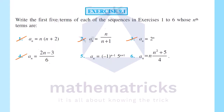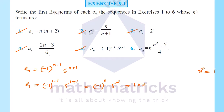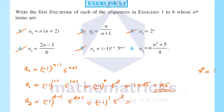Next, question 5: an is equal to minus 1 raise to (n minus 1) into 5 raise to (n plus 1). When n equals 1: minus 1 raise to (1 minus 1) into 5 raise to (1 plus 1), that is minus 1 raise to 0 into 5 raise to 2. Since any number raise to 0 is equal to 1, this equals 1 into 25, that is equal to 25. When n equals 2: minus 1 raise to (2 minus 1) into 5 raise to 3, that is minus 1 raise to 1 into 125, that is minus 1 into 125, equal to minus 125.